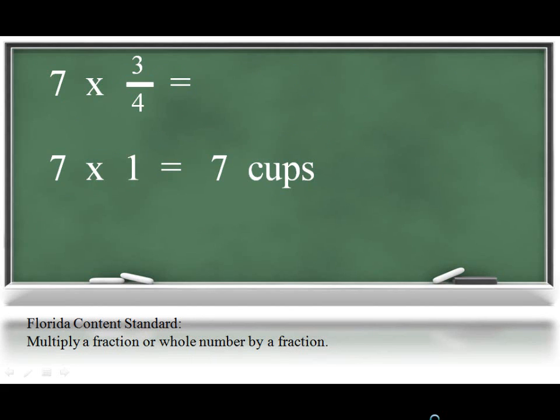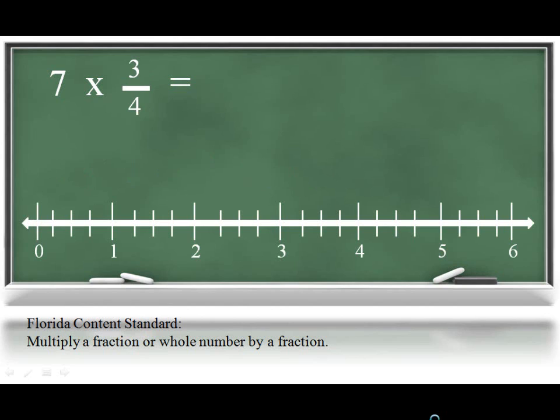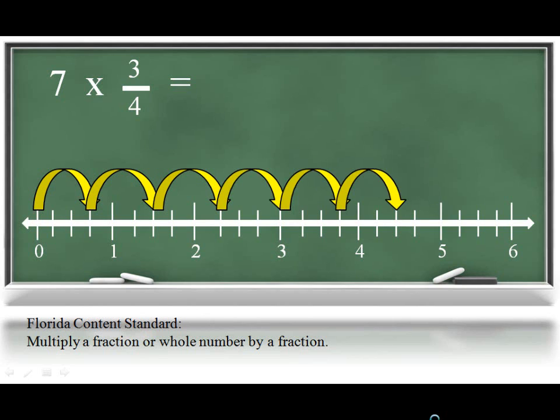Next, your child would need to create a model to represent and explain their solution. For example, by using a number line, they could use what they already know about the multiplication of fractions as repeated addition of equal groups, to show that 7 groups, or jumps, of 3 fourths would end at 21 fourths, or 5 wholes and an extra fourth.